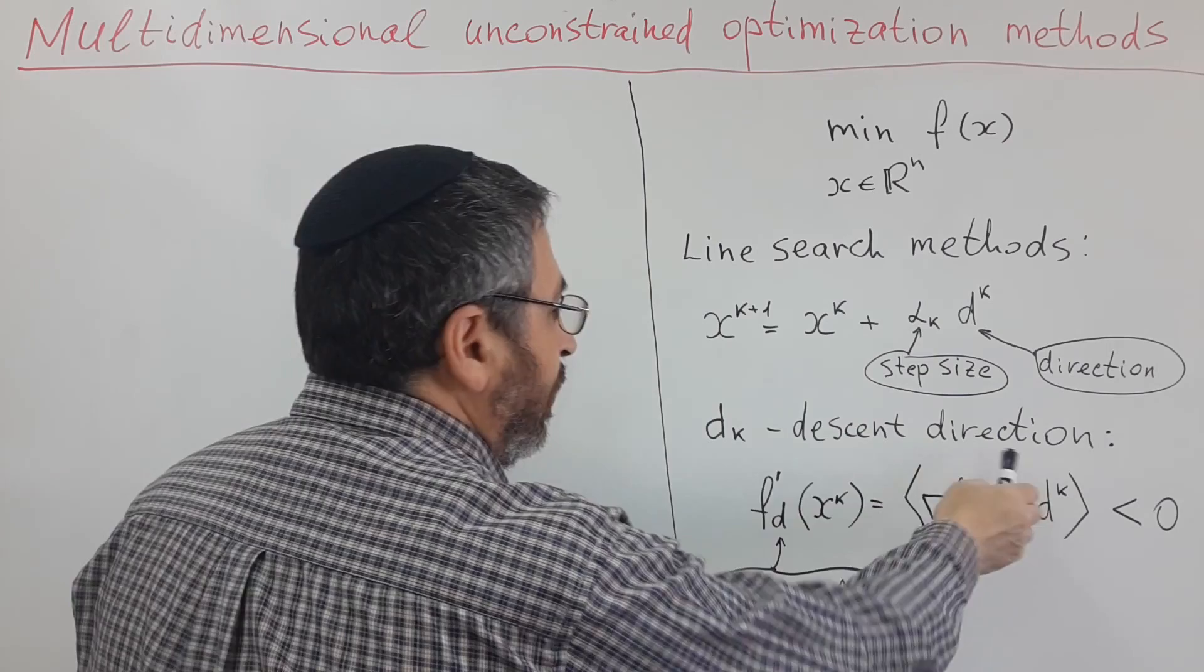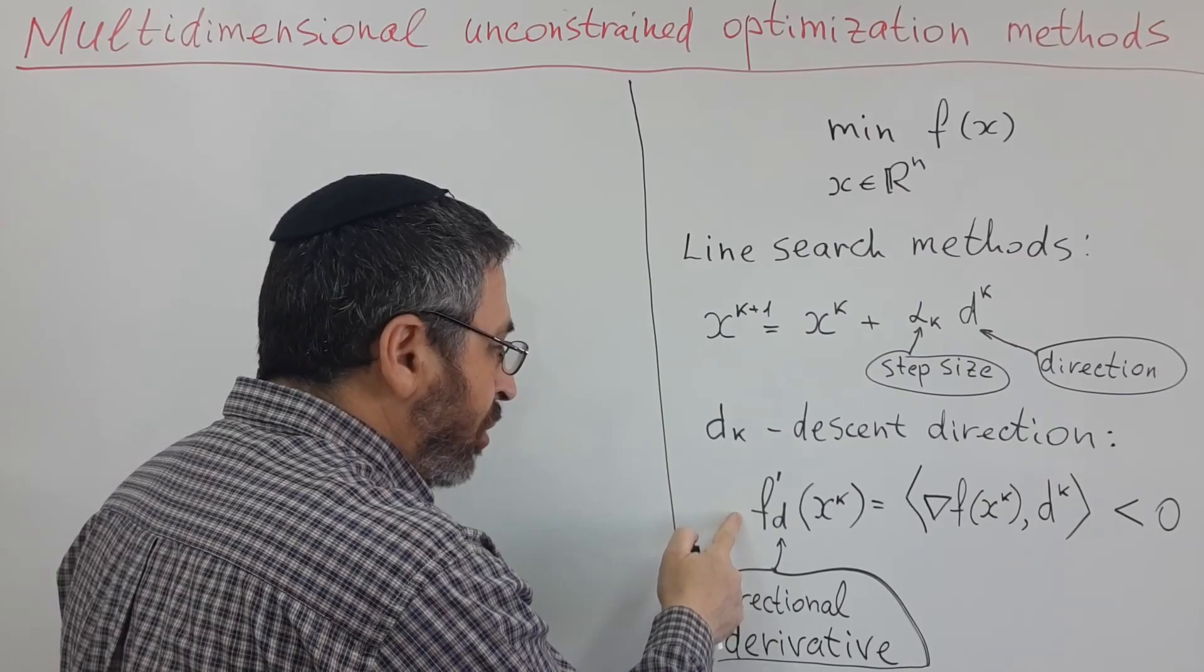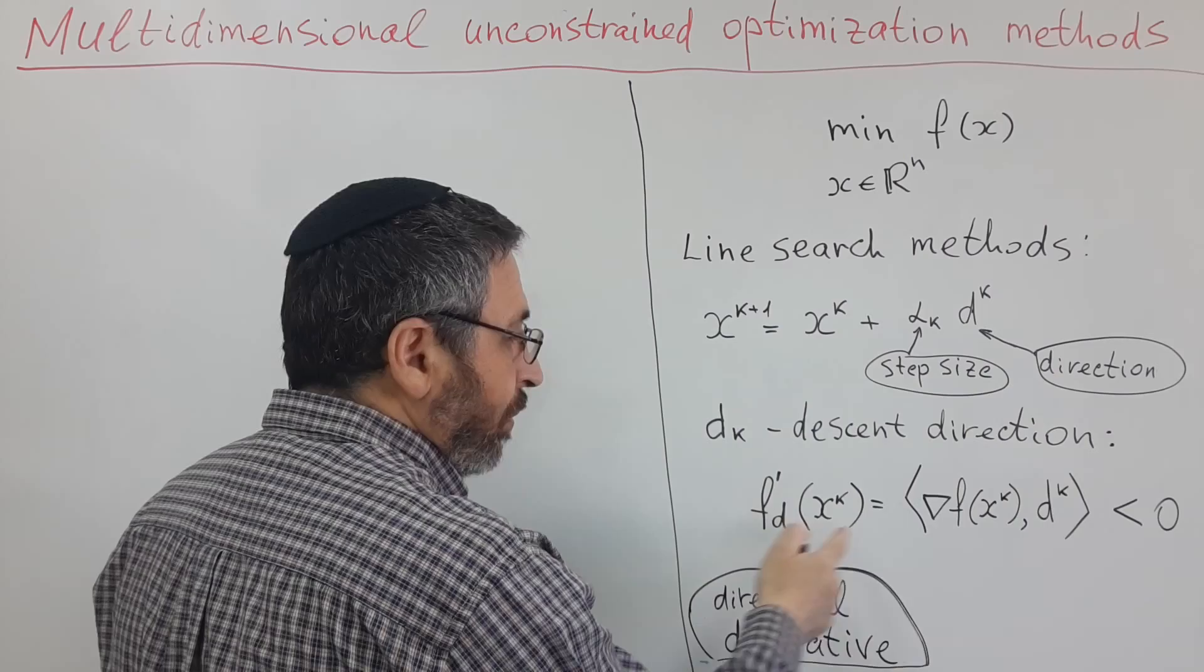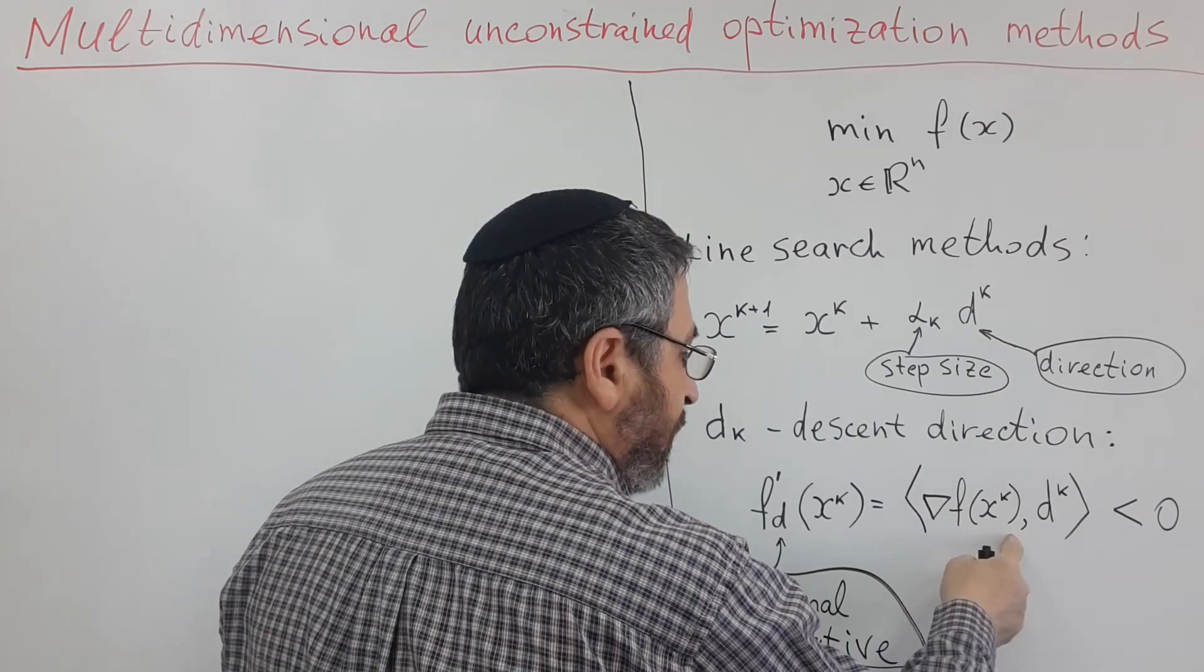In order for dk to be direction of descent, we need a directional derivative in direction of dk to be negative. And directional derivative is the inner product of gradient with vector of direction.